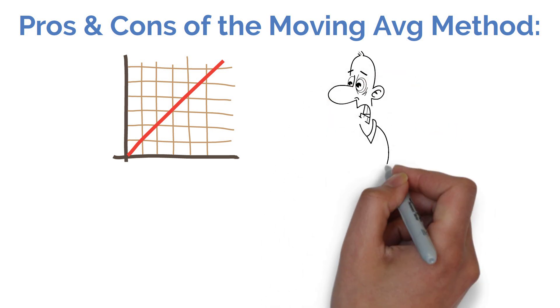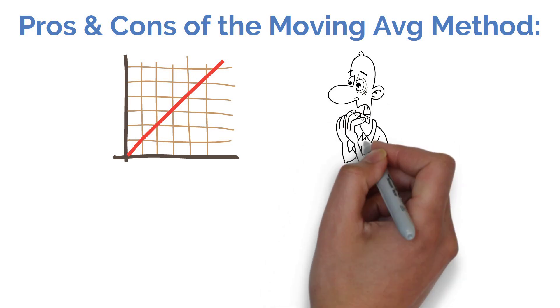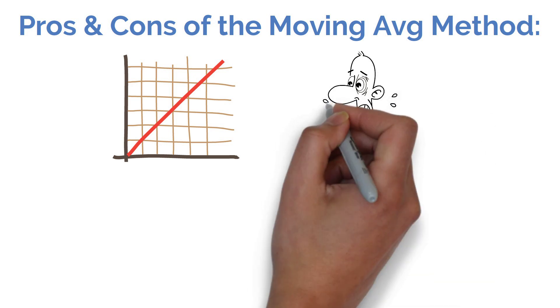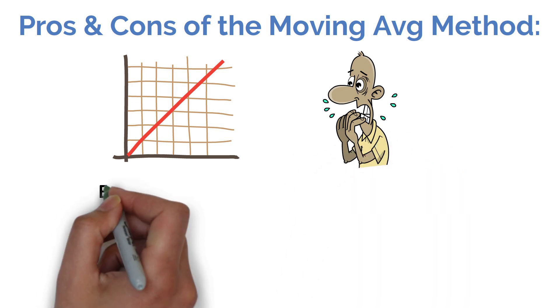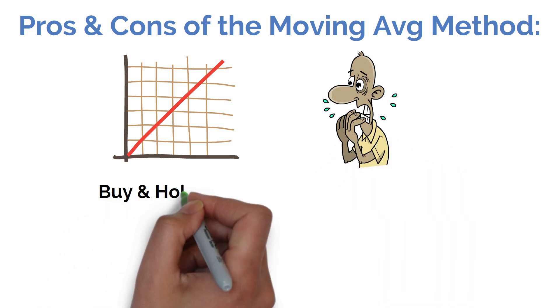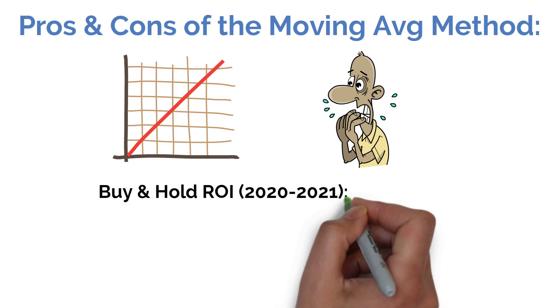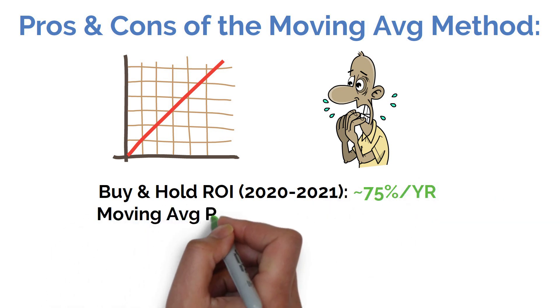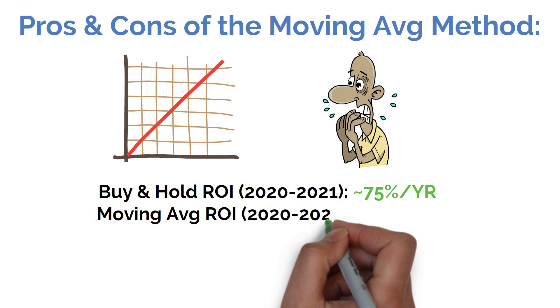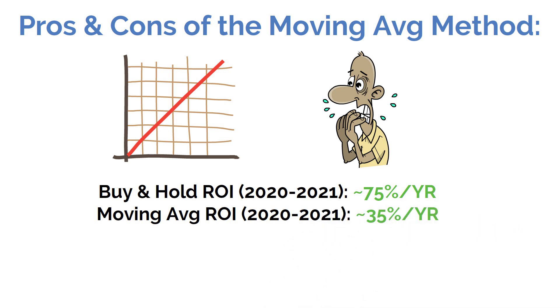Take 2020, for instance. It was pretty volatile and as a result may have resulted in a few buy or sell signals for those keeping an eye on moving averages. From March 23rd, 2020 to the same time the following year, a $10,000 investment in the S&P 500 would have grown to around $17,500. That same $10,000 under a 50-day moving average method would have only grown to around $13,500.